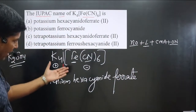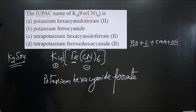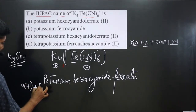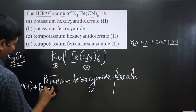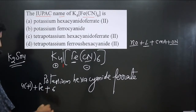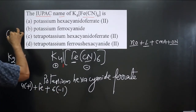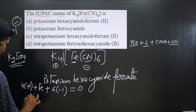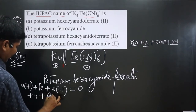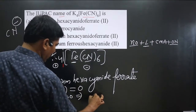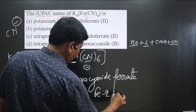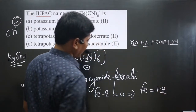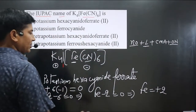To calculate the oxidation number: there are 4 potassium ions, each with a +1 charge, giving +4. There are 6 cyanide ions, each with a −1 charge, giving −6. The complex is neutral, so the equation is: +4 + Fe − 6 = 0, which gives Fe − 2 = 0, so Fe = +2. The oxidation number of iron is +2, written in Roman numerals as (II).